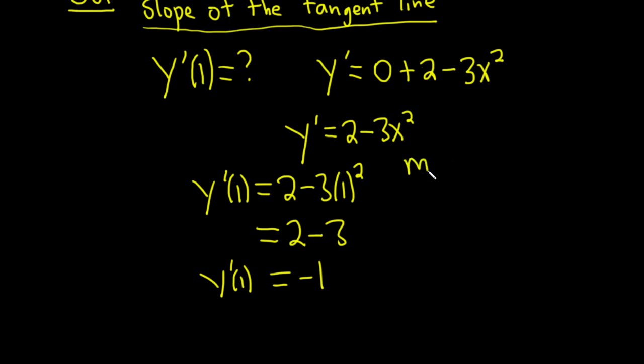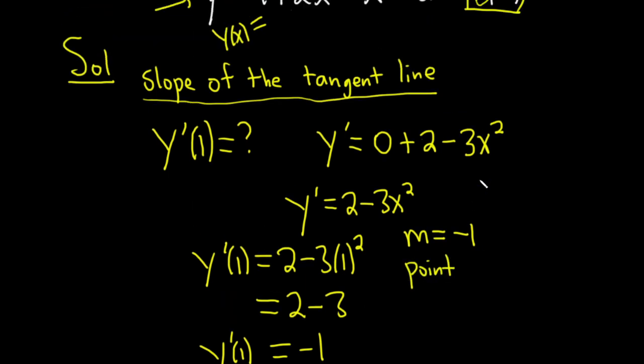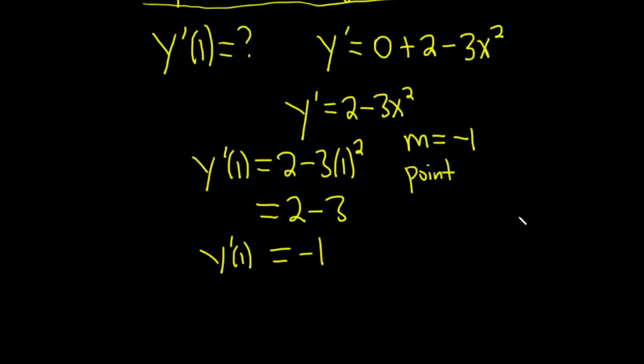So now we have our slope, which I'll call m. And we have our point, let's see what that was, (1, 2). I'm going to put this information in a box just so we don't lose it because there's a lot going on.